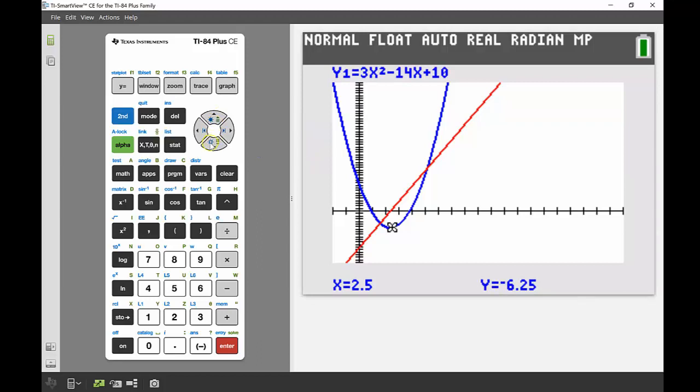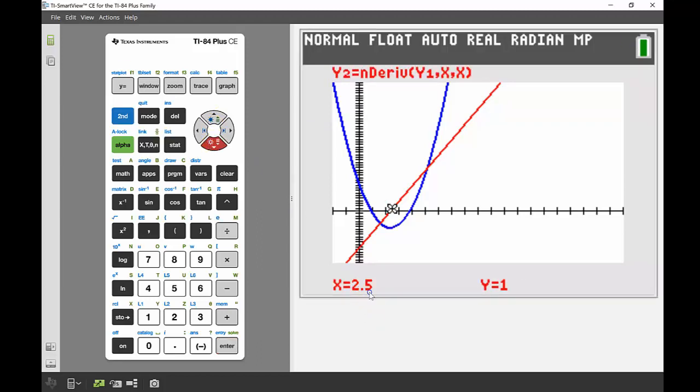If I just use the up or down keys, that'll take me through to my acceleration graph. There we go, 2.5, my acceleration is equal to 1. That's perfect there.